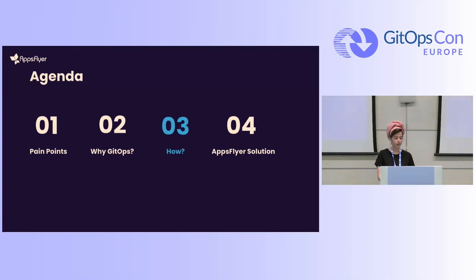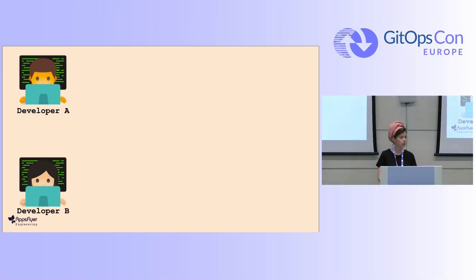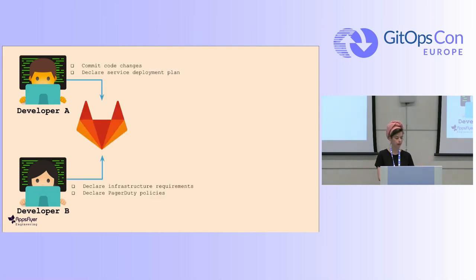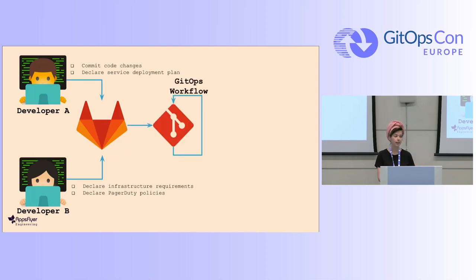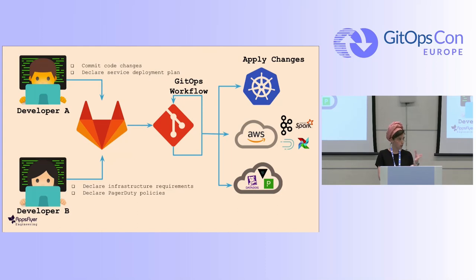How did we approach this solution? We looked at a developer's day-to-day flow in AppsFlyer. We have Developer A and Developer B. Developer A commits some code changes and declares some service deployment plan and commits it to Git — we use GitLab at AppsFlyer. Developer B commits some infrastructure requirements and some PagerDuty policies. They both push to the same Git repository. Then the GitOps workflow comes into account, takes all the changes committed to Git, and applies the changes and communicates them to all our resources — from Kubernetes deployments to SaaS integrations. Everything.